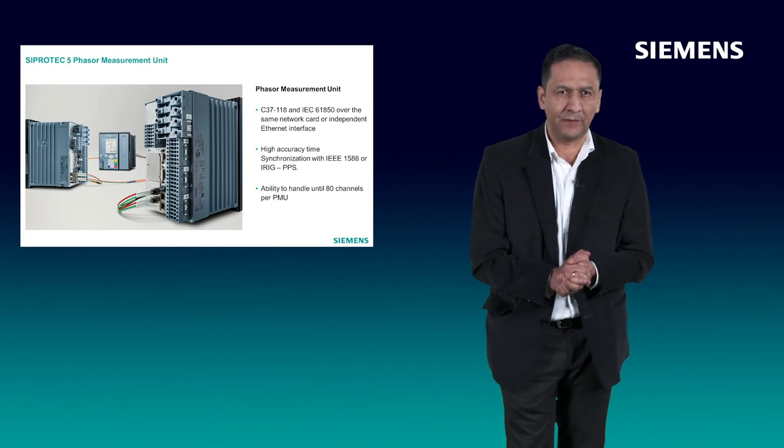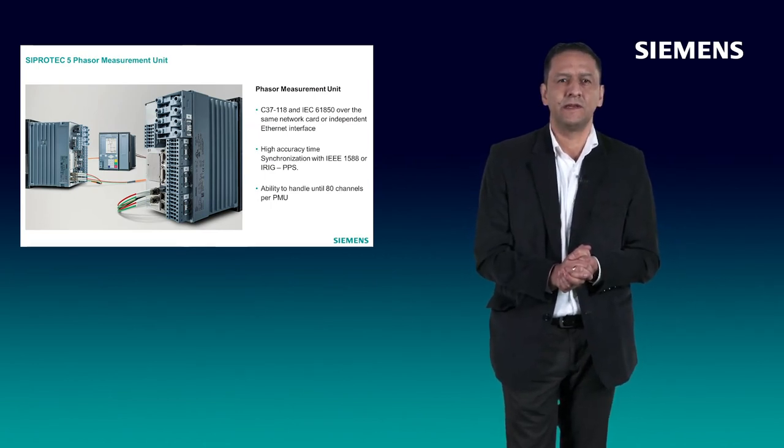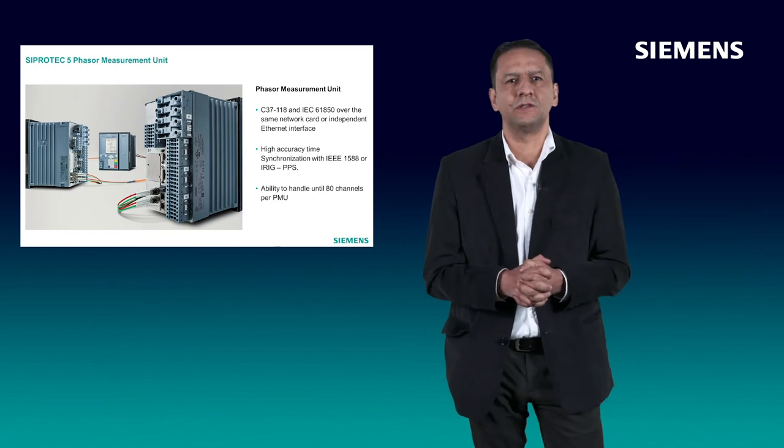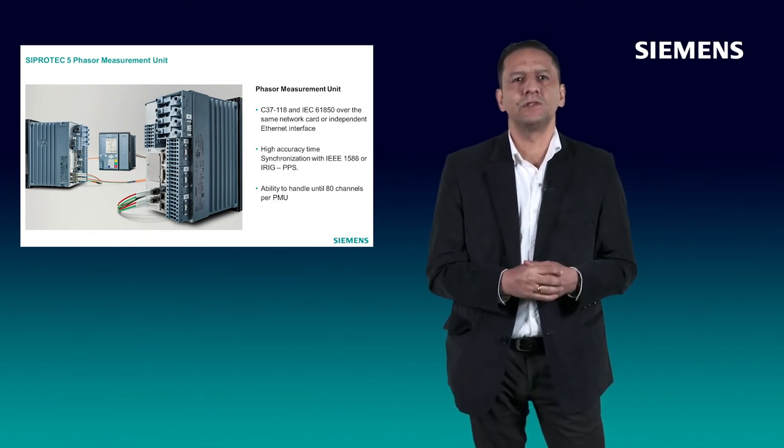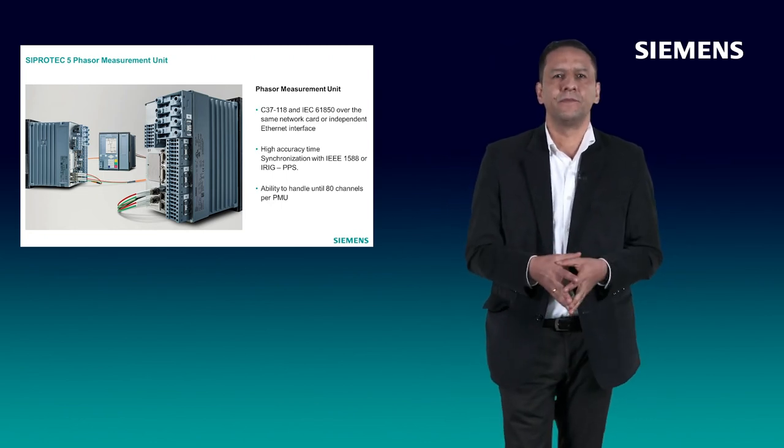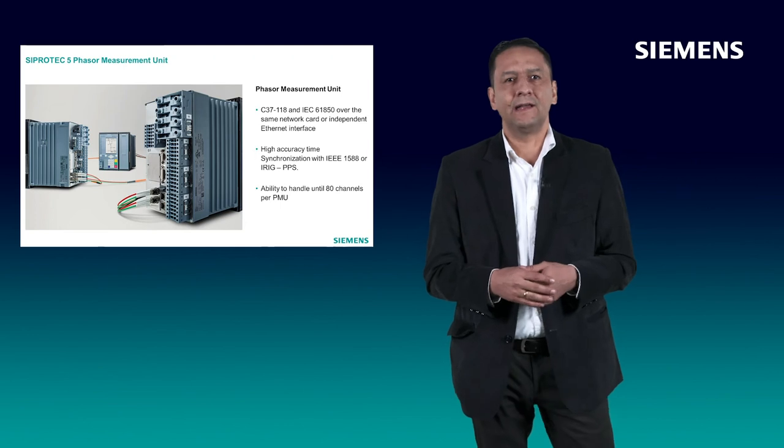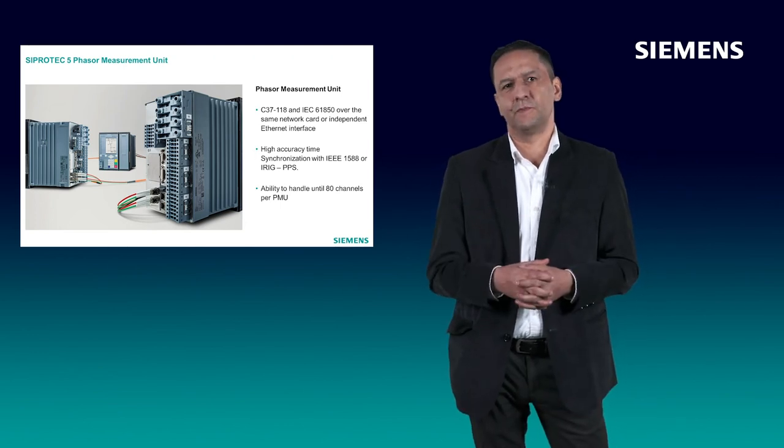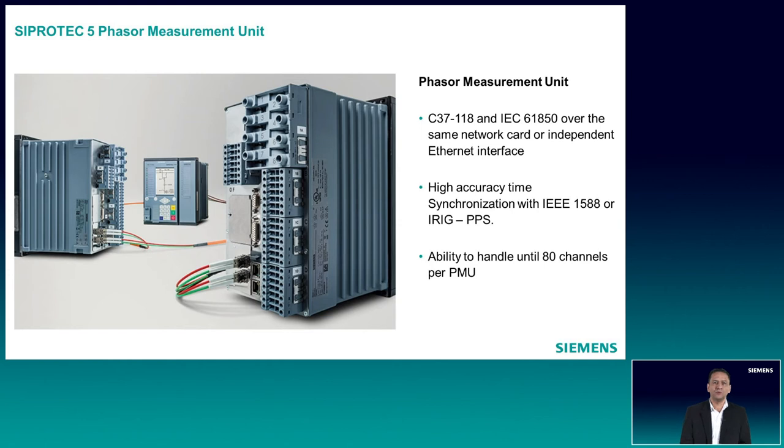The other important topic related to Wide Area Monitoring Systems is the phasor measurement unit, so-called PMU. The PMU streams the data related to voltage and current in magnitude and angle, also the frequency and rate of change of frequency as basic information. SIPROTEC 5 PMU streams the data in C37.118 and can be time synchronized using precision time protocol IEEE 1588 or pulse per second. The SIPROTEC 5 PMU functionality is available in all SIPROTEC 5 devices.